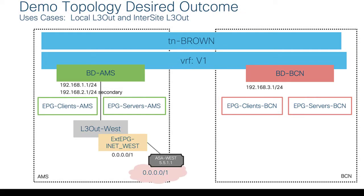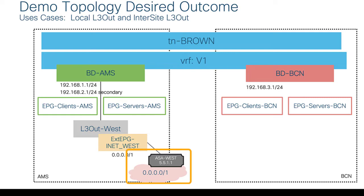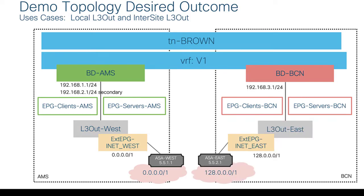I'm going to import an existing layer 3 out that's configured in APIC into MSO. We've got a layer 3 out I'll call West and an external EPG called INET West that represents the local resources available to site AMS — with a layer 3 out to a device called ASA West. That ASA is advertising the route 0.0.0.0/1, half of the IPv4 routing table — resources only available through the layer 3 out inside Amsterdam. I'll also import a second unique layer 3 out from Barcelona to a different firewall, ASA East, advertising 128.0.0.0/1 — the other half of the IPv4 routing table, representing resources uniquely available only through the Barcelona layer 3 out.